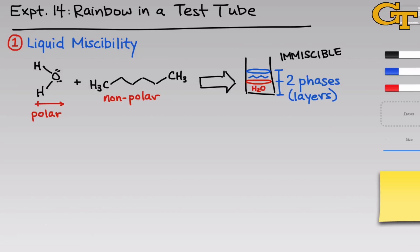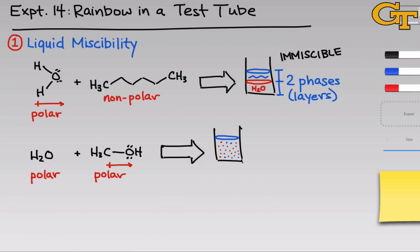Now consider a second situation in which we again start with polar water, and to that we add polar methanol. Methanol is a polar molecule with a dipole moment pointing towards the oxygen atom. When we mix these two together, we do end up with one single homogeneous solution. Water and methanol mix with one another, and we see one phase when these two are combined. Because they mix up to form a liquid-liquid solution, water and methanol are called miscible — they're able to be mixed with one another.